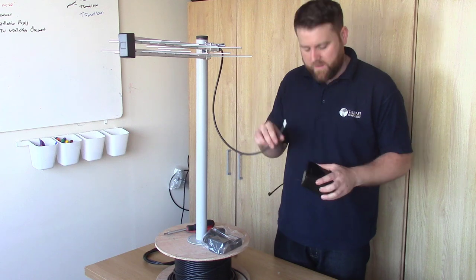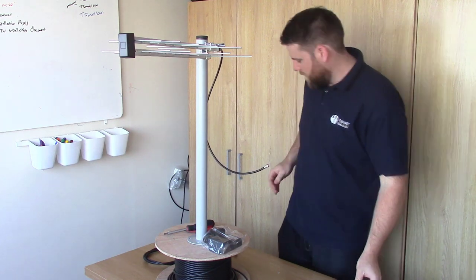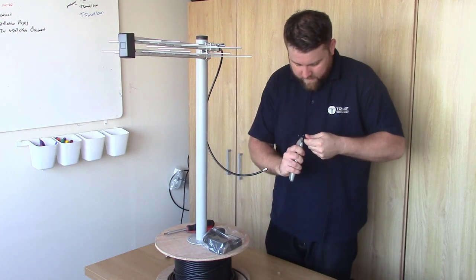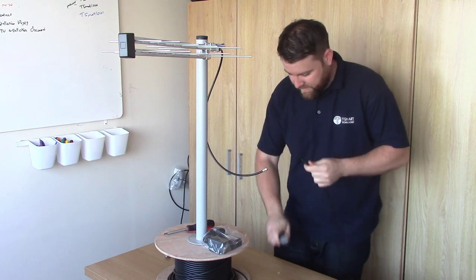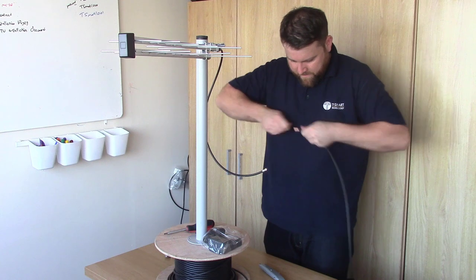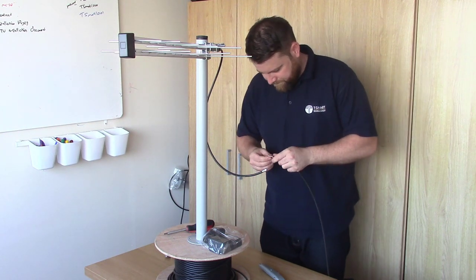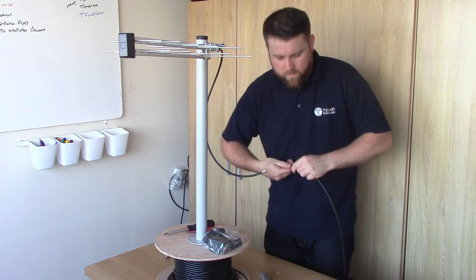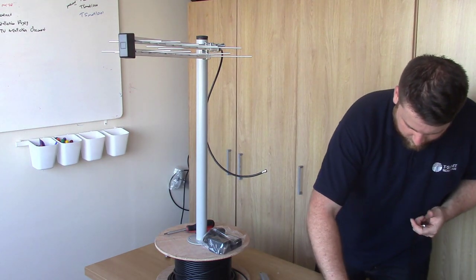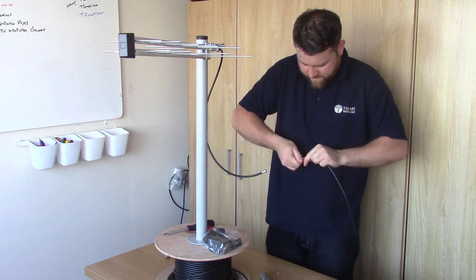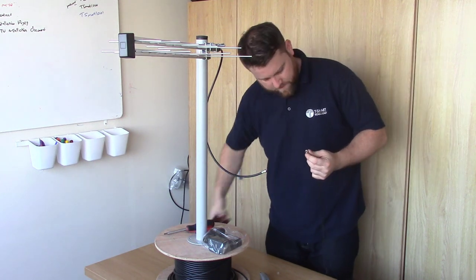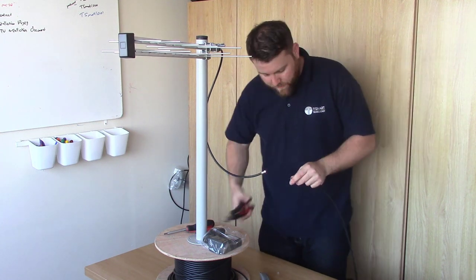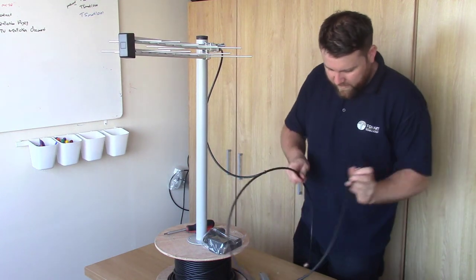So we've done the aerial side of the masthead amplifier. What we're going to do is put that on. And we're going to do the TV cable side. So this is what's going to run down to our TV. And then it'll go into our power unit, and then on. So we'll do that. Okay, so now we have two F plugs. We have an in and out. And we can fit our masthead amplifier.